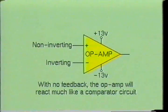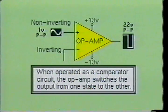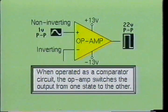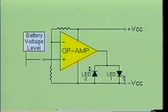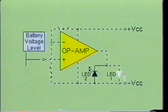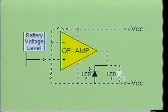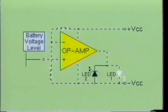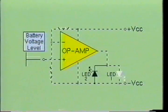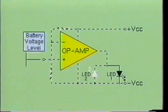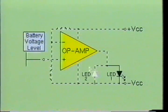When operated with no feedback, the op-amp is being operated as a comparator circuit. In a comparator application, the op-amp does not operate as an amplifier, but rather as a switching device used to indicate when a voltage level is above, below, or equal to a known reference voltage. Here we see an op-amp being used as a voltage level indicator with two light-emitting diodes at the output, which can indicate the charge level of a battery on a battery charger. When the voltage at the non-inverting input is below the reference voltage at the inverting input, the output voltage will be negative and LED1 will be lit. As the battery voltage increases to a level greater than the reference voltage, the output voltage will swing positive, LED1 will turn off and LED2 will turn on, indicating the battery is fully charged.